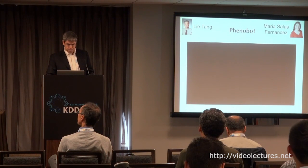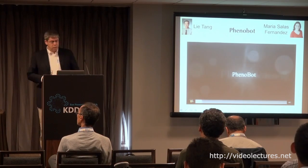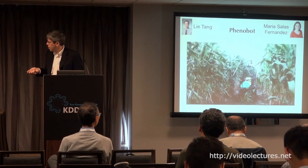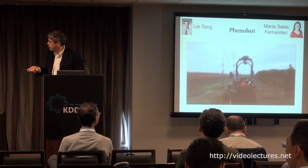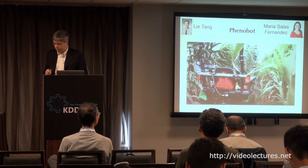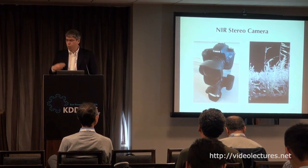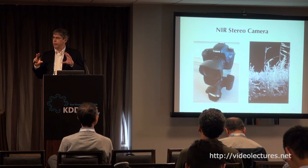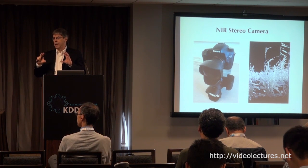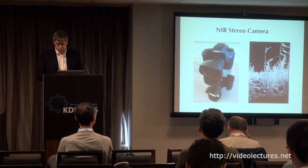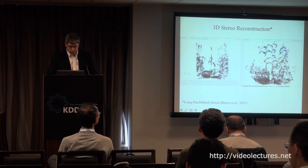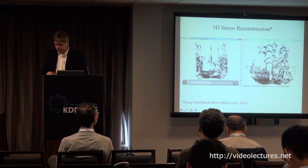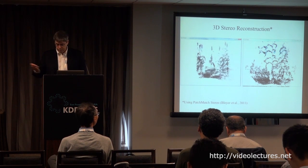Let me begin with the Phenobot. This is a USDA-funded project — Lee Tang, an ag engineer, and Maria Salas, a sorghum breeder, are my co-PIs. This looks like a garden tractor, but it's actually a robot because it has a GPS and auto-steer unit with a number of sensors on the front — it's fully autonomous. We've outfitted it with pairs of reasonably high-end consumer-grade cameras adapted to detect in the near-infrared, so we can generate stereo images and reconstruct in point clouds the 3D structure of these plants over time.